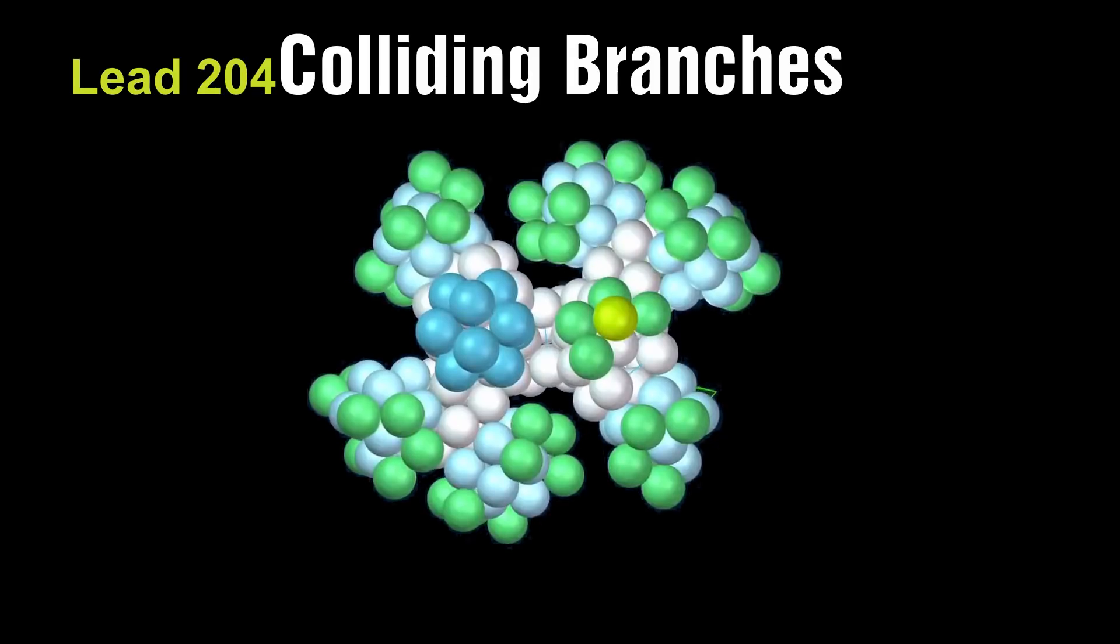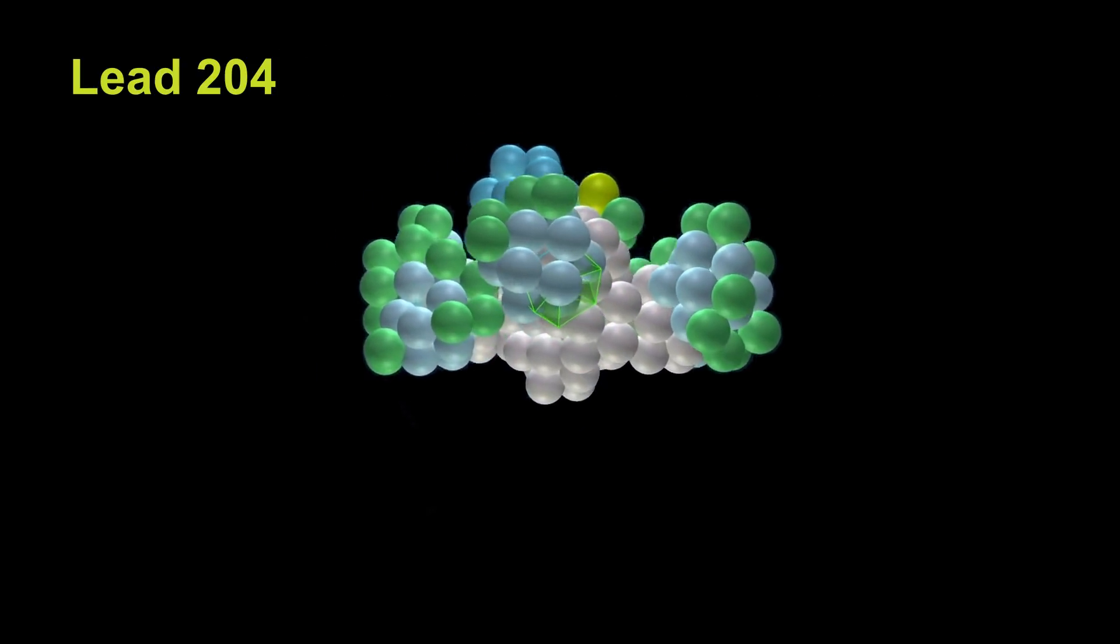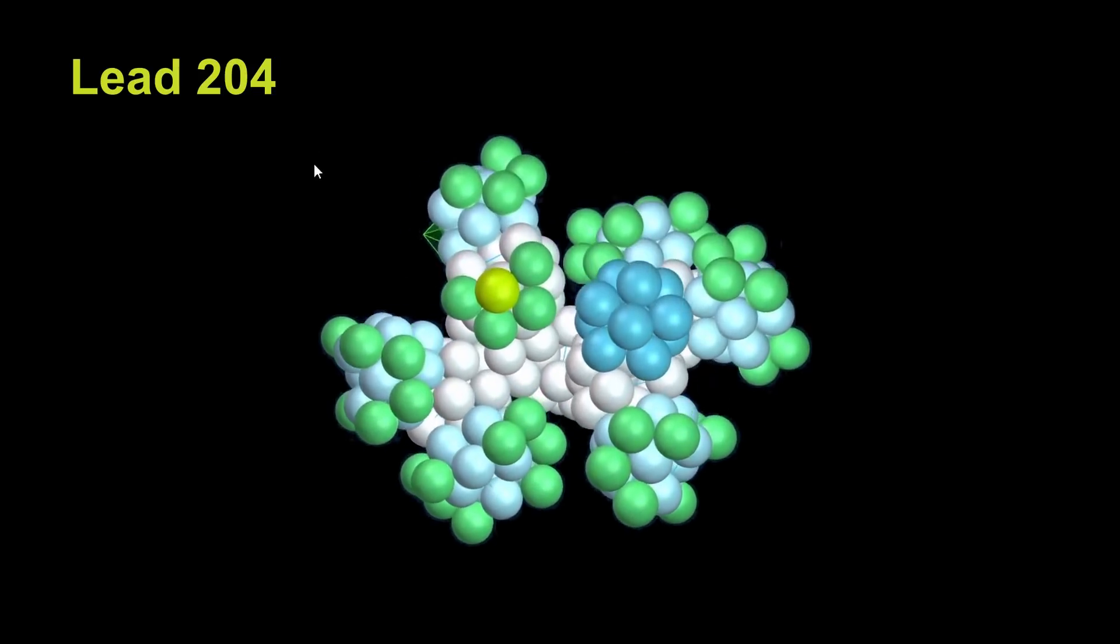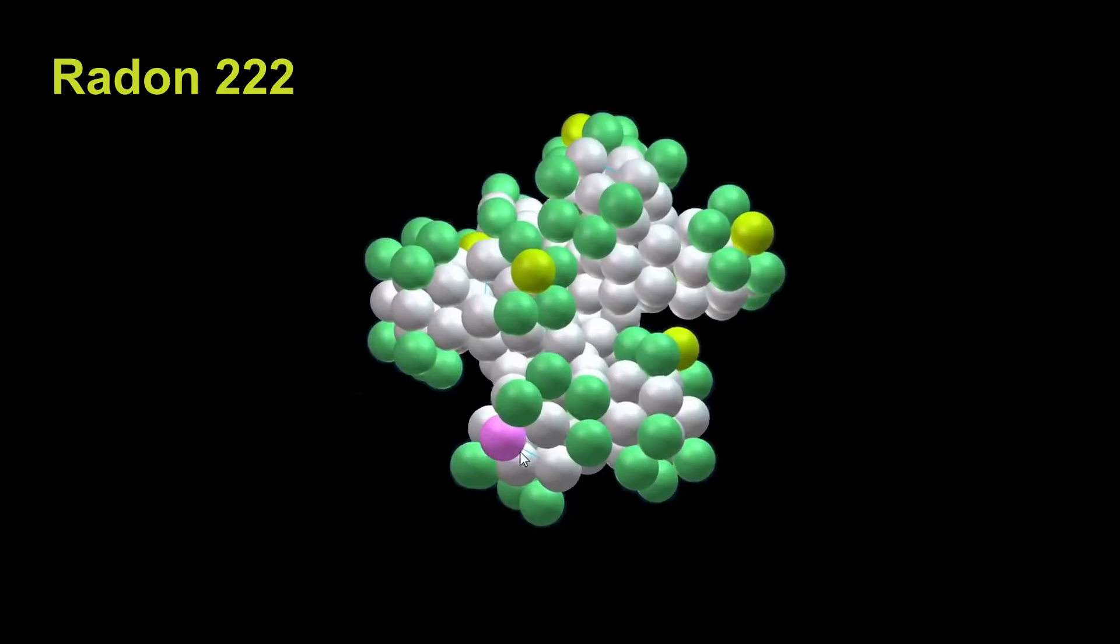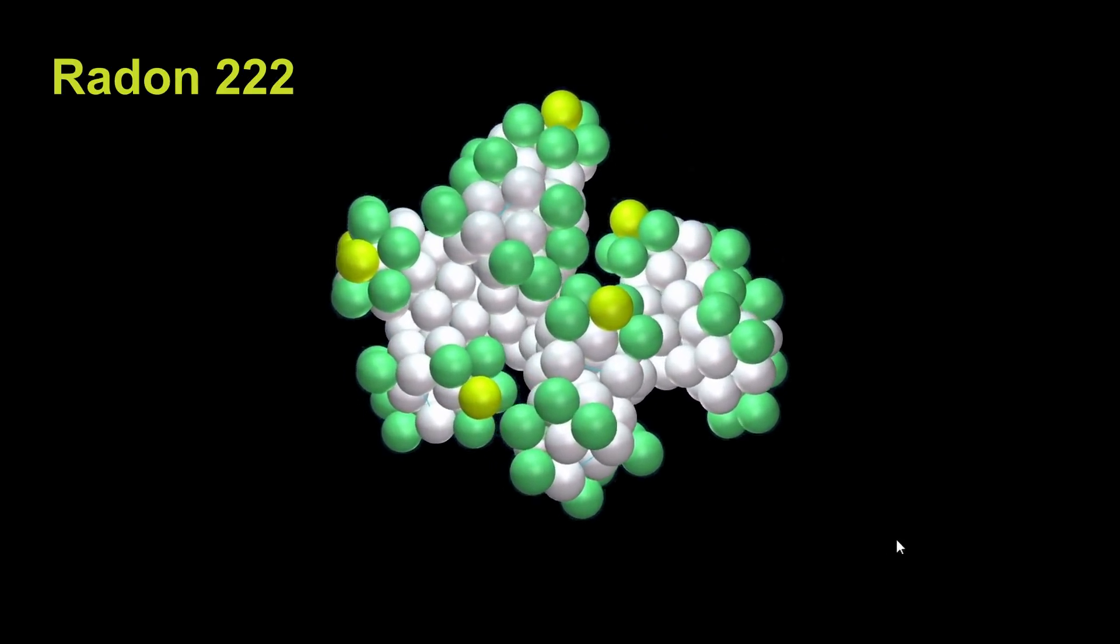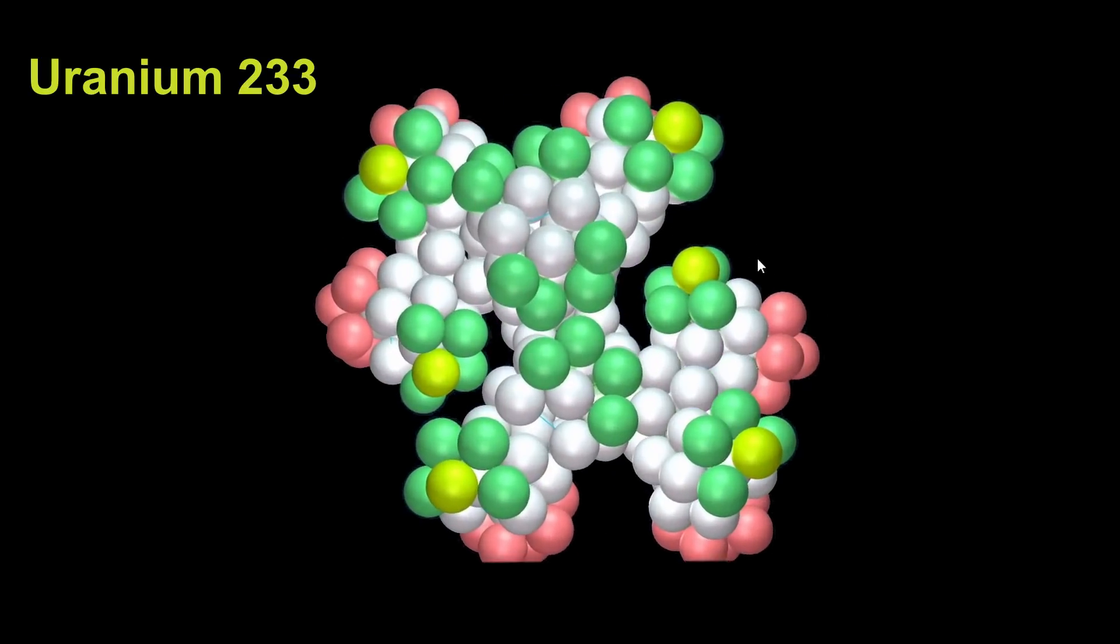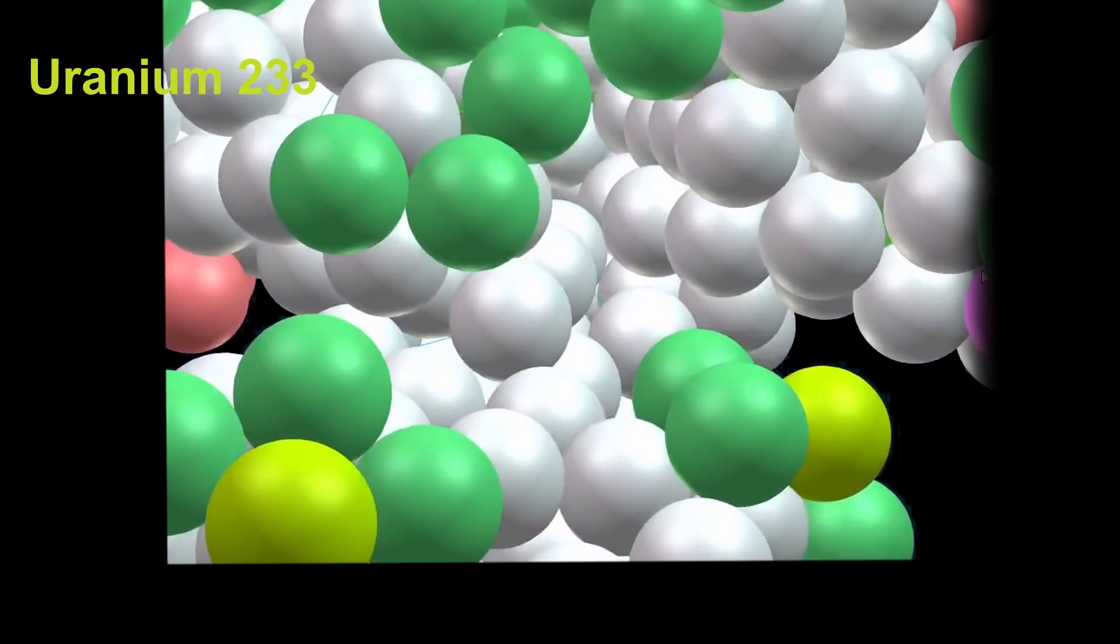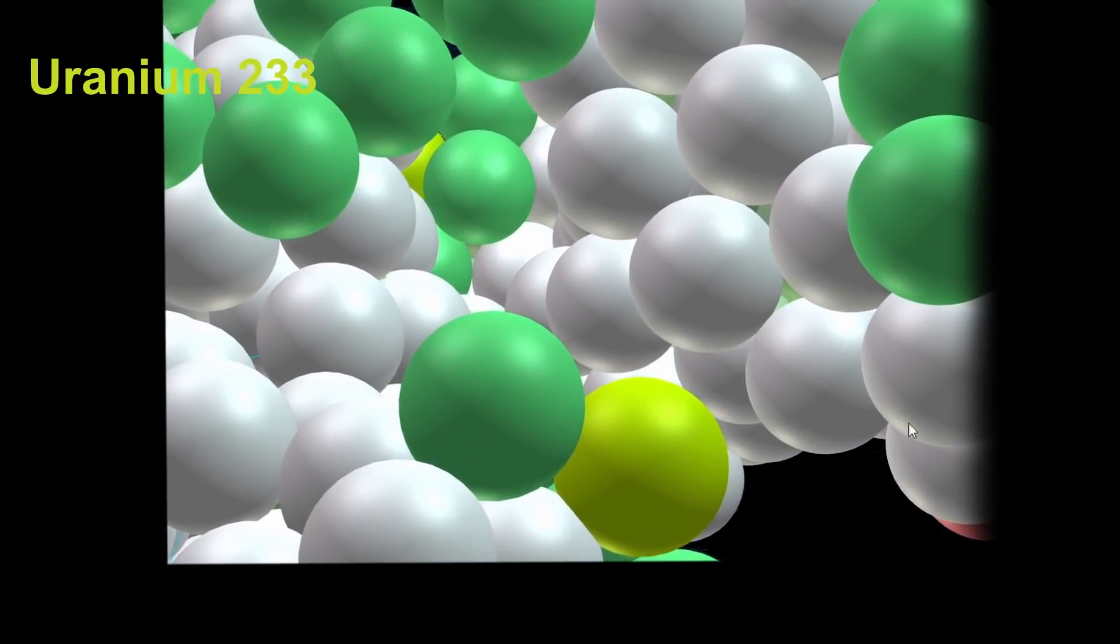Colliding branches: collisions or close contact of branches happen just after lead which also happens to be one of the last stable elements. Radon is the next noble element but it is unstable and decays. If we examine uranium we can see more clearly the problems with two branches coming too close to each other. Further growth on that spot would lead to overlapping of potential spots. Hence it must and will react.